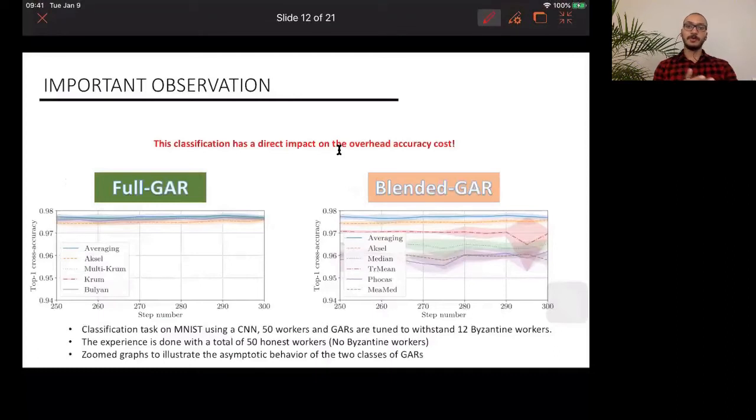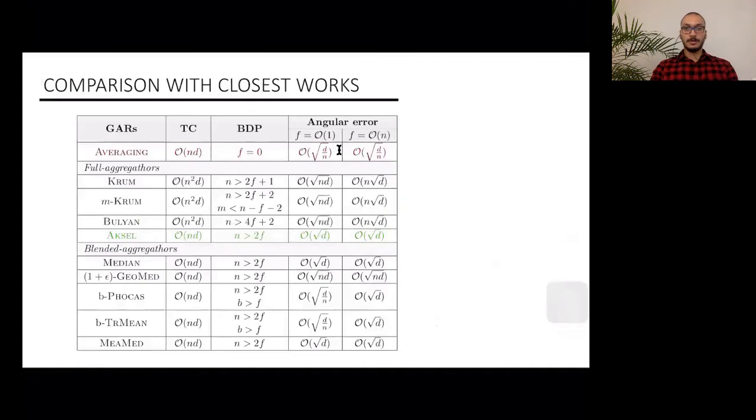So this is exactly the third point we discussed earlier on the fact that the defense mechanism should not degrade the system. What we see here is an experimentation involving 50 workers, and the aggregation rules are tuned to withstand 12 Byzantine workers, but actually none of them are Byzantine in the experiment. Let's just forget for now the name Axel, which is the name of our algorithm, and take a look at the performance of these aggregation rules. It's clear that full guards have no overhead accuracy cost. You see that they are reaching the accuracy of averaging, but the blended guards, they have this gap. They don't reach this top accuracy, which is reached by average.